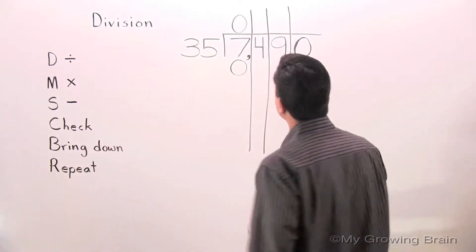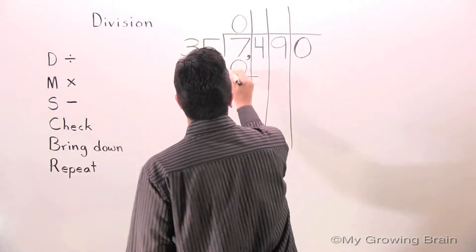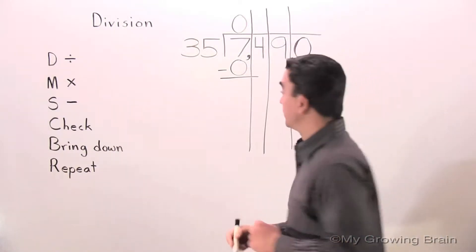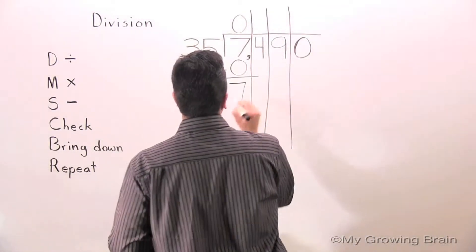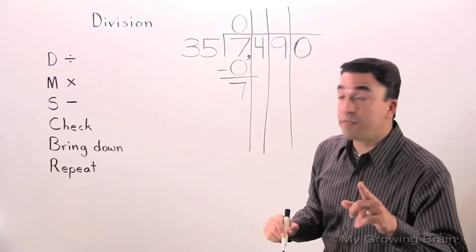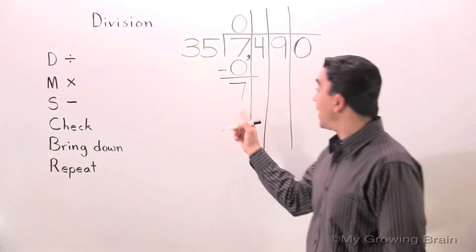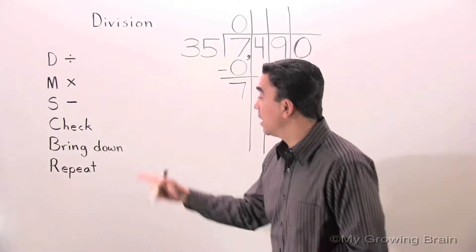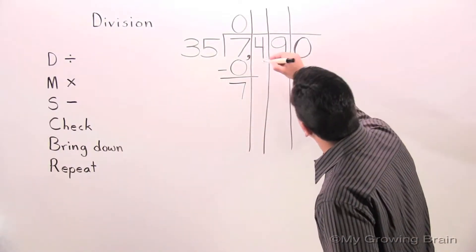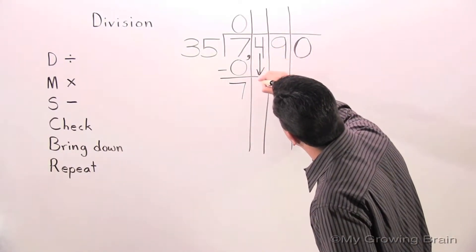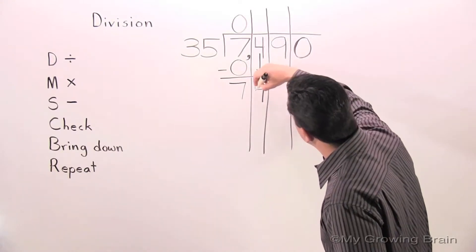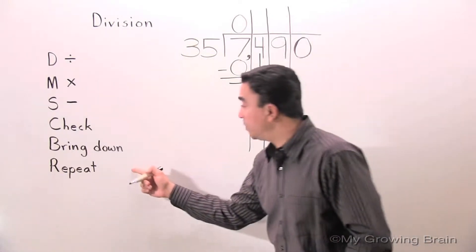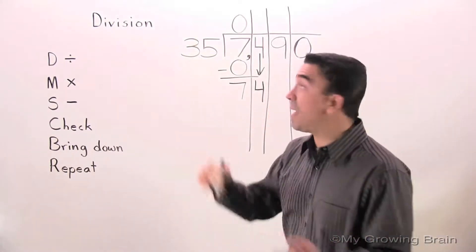Subtract. 7 minus 0 equals 7. Next step. Check. 7 is less than 35. Let's keep going. Bring down. Next step. Repeat the process. Go back to the top.